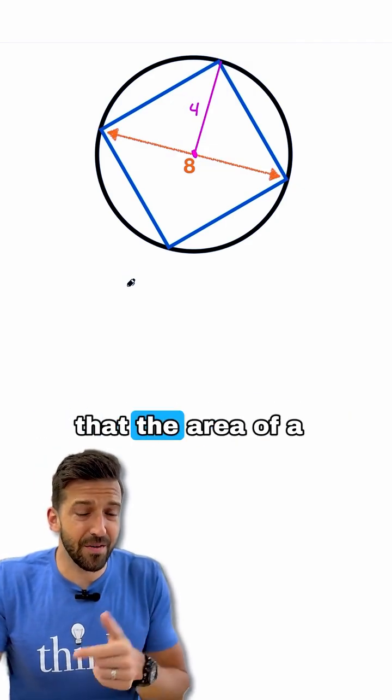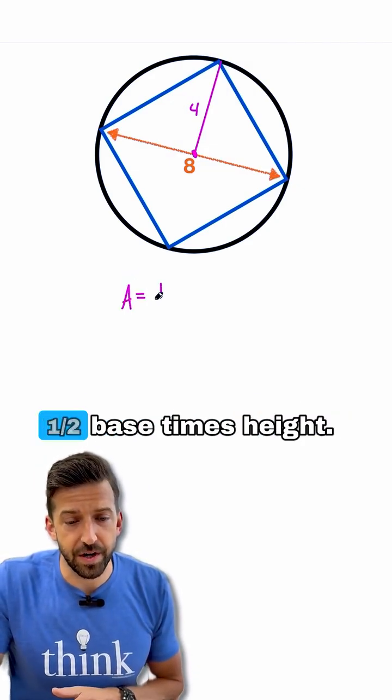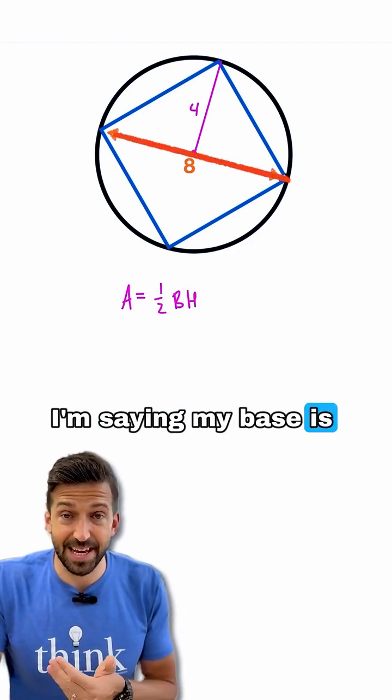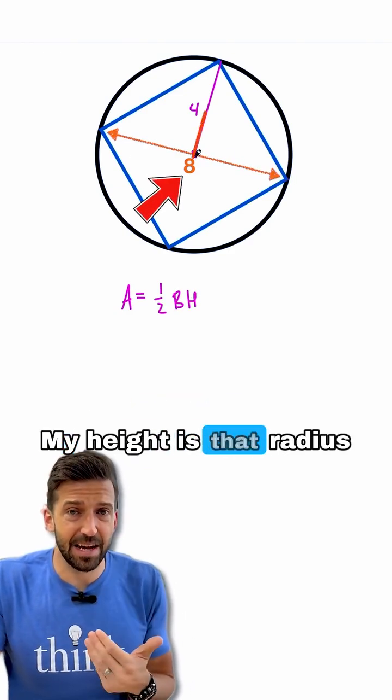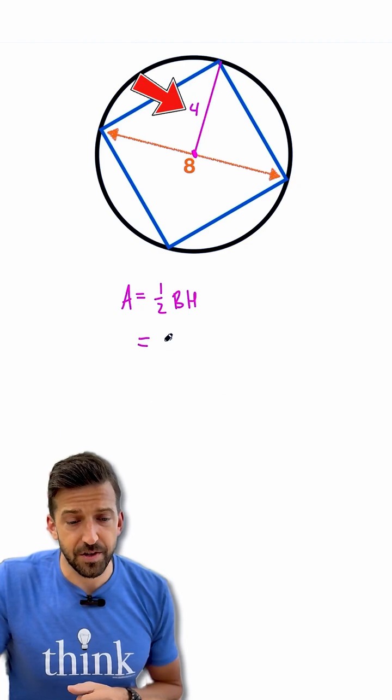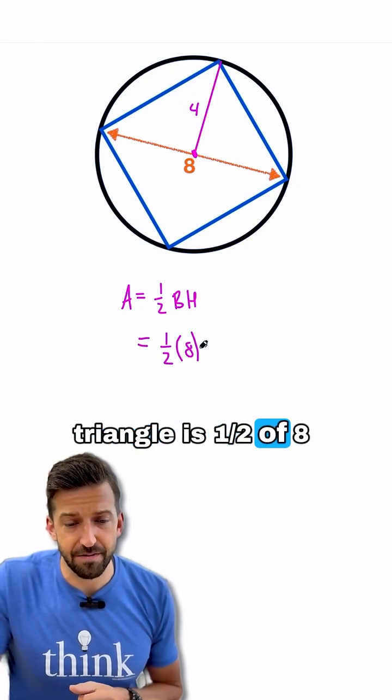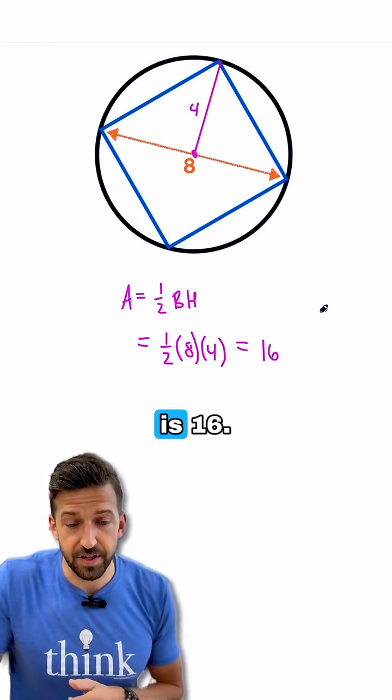You probably remember that the area of a triangle is area equals one half base times height. I'm saying my base is that diameter, that's 8. My height is that radius that I drew in, that's 4. So the area of that triangle is one half of 8 times 4, which is one half of 32, which is 16.